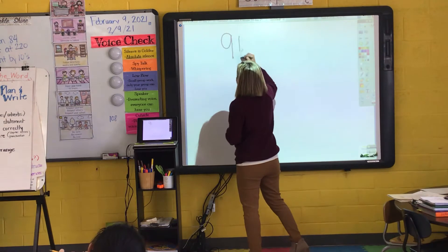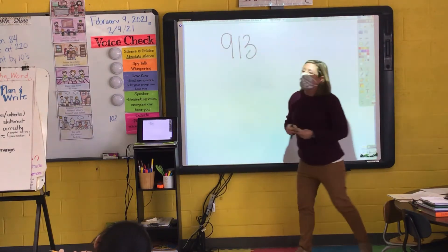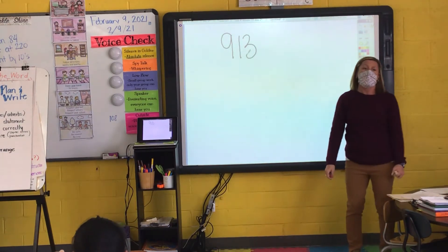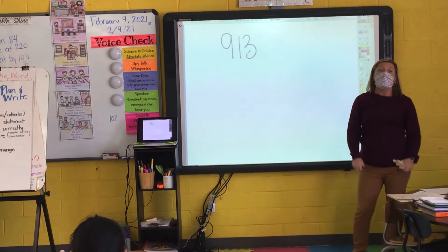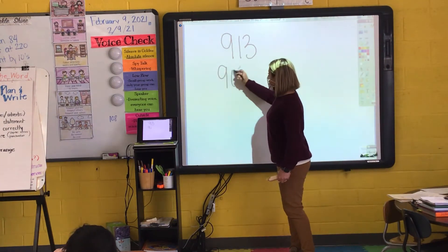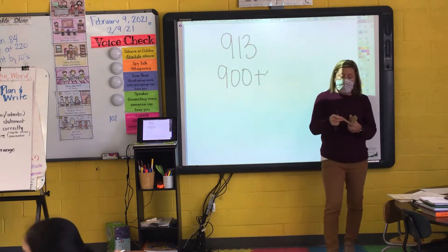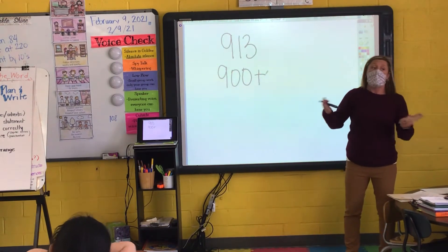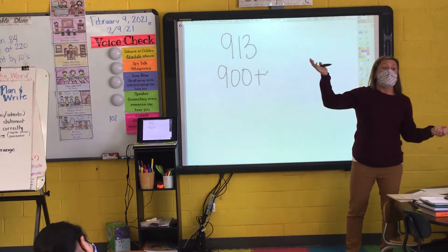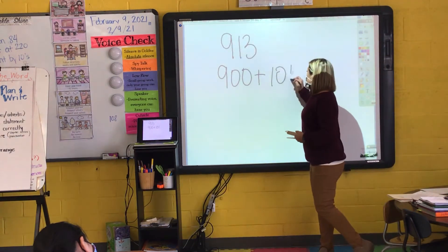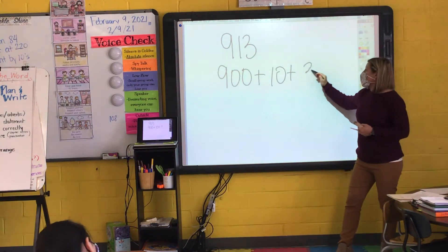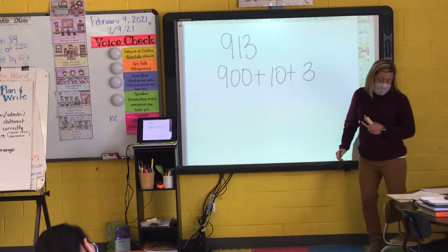Let's look at 913. How would I write 913 in expanded form? How many hundreds? Nine hundred. Plus how many tens? One ten. Plus how many ones? Three. So: 900 plus 10 plus 3.